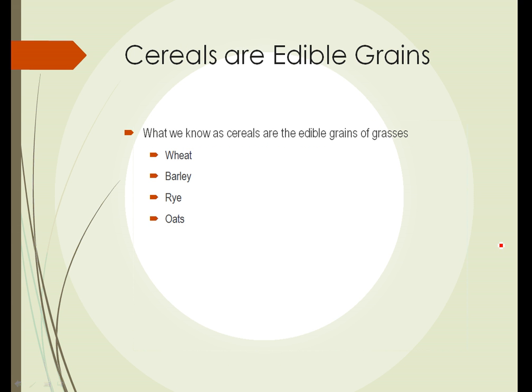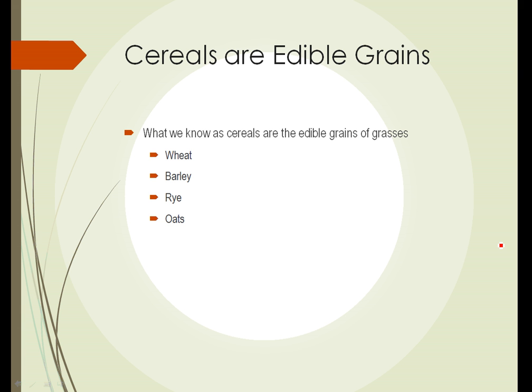The cereals are the edible grains of the grasses: wheat, barley, rye, and oats are included in that group. Technically, the seeds of all grasses are edible. It just so happens that these are among the largest seeds and also the most palatable seeds to humans.